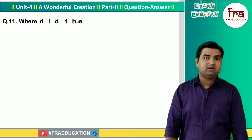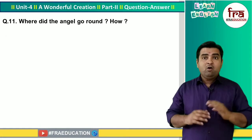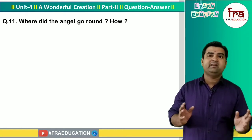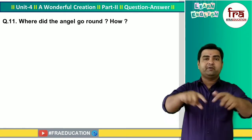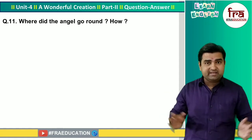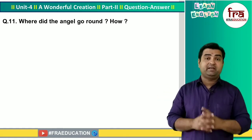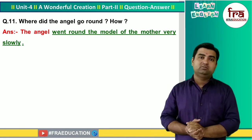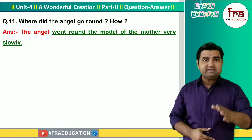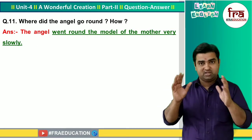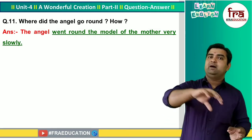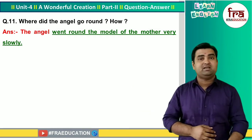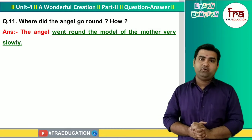Question number 11: Where did the angel go around and how? The angel went around the model of the mother very slowly.